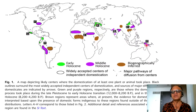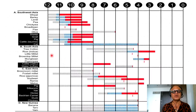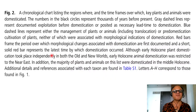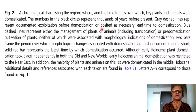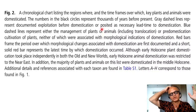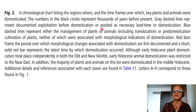We can see the sequence A, B, C, D, E, F, G, H. Let's now look at the regions where specific crops and animals may have been domesticated. We'll go through a couple of chronological charts listing regions and time frames over which key plants and animals were domesticated, going from 12,000 years to about the present. Numbers in black circles represent thousands of years before present. Gray dashed lines represent documented exploitation before domestication, as there may have been crops growing around human settlements because humans were fertilizing the land through feces and waste.